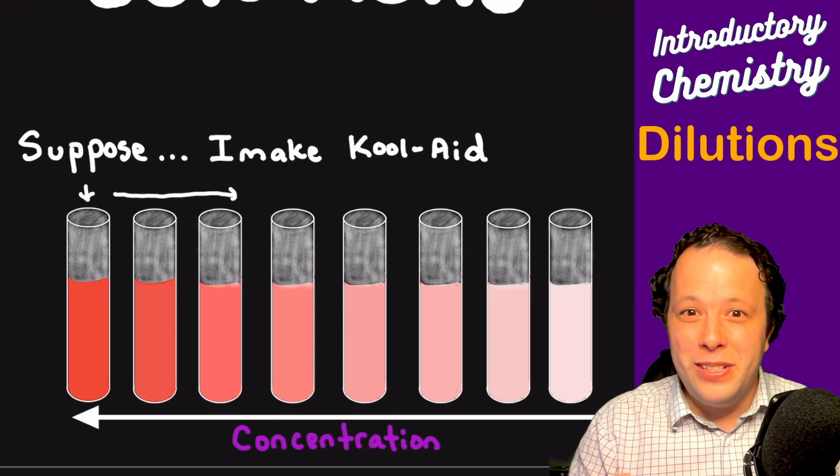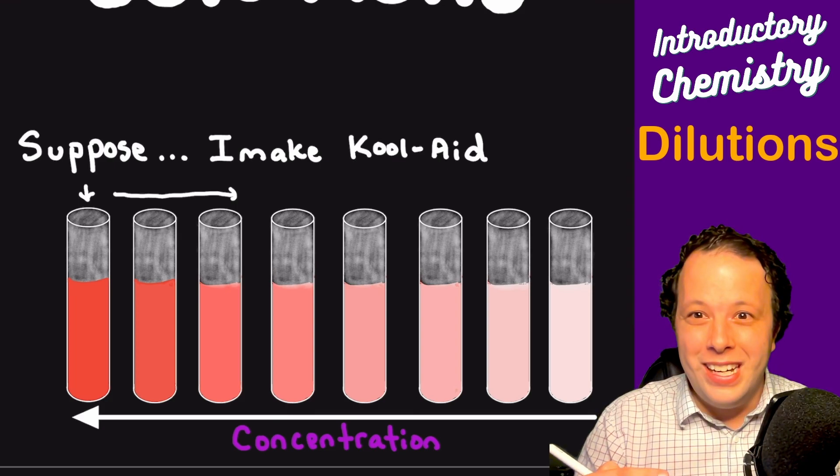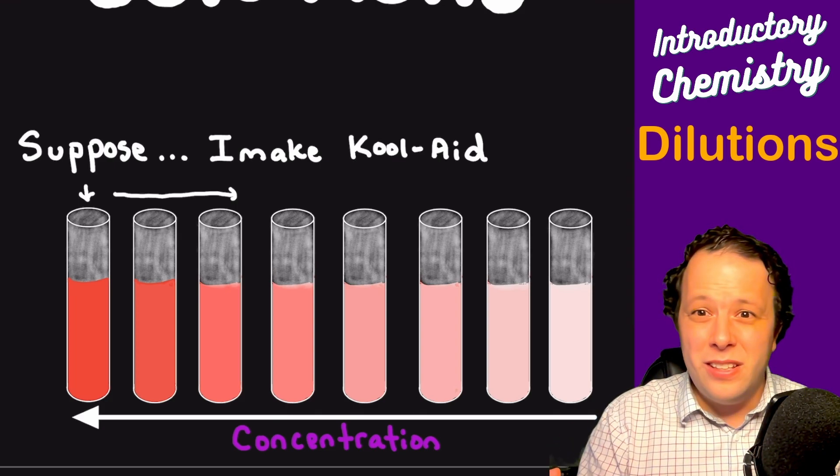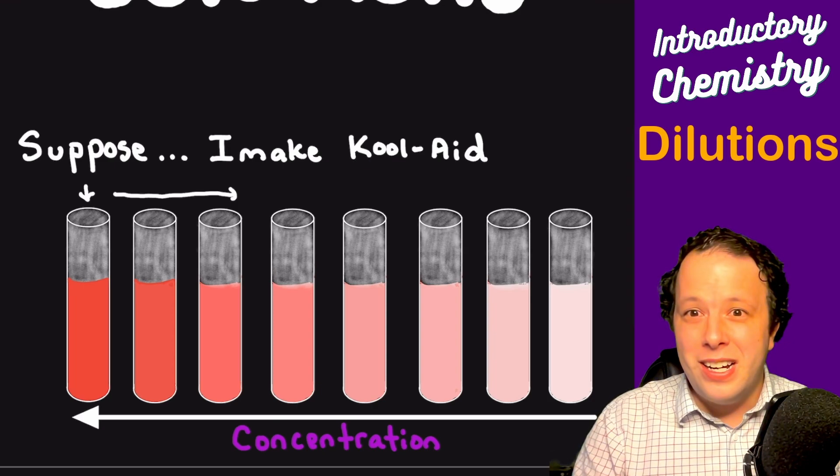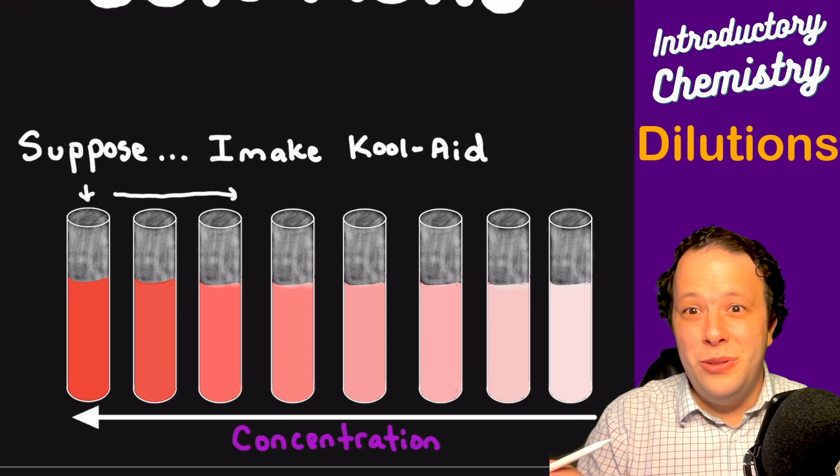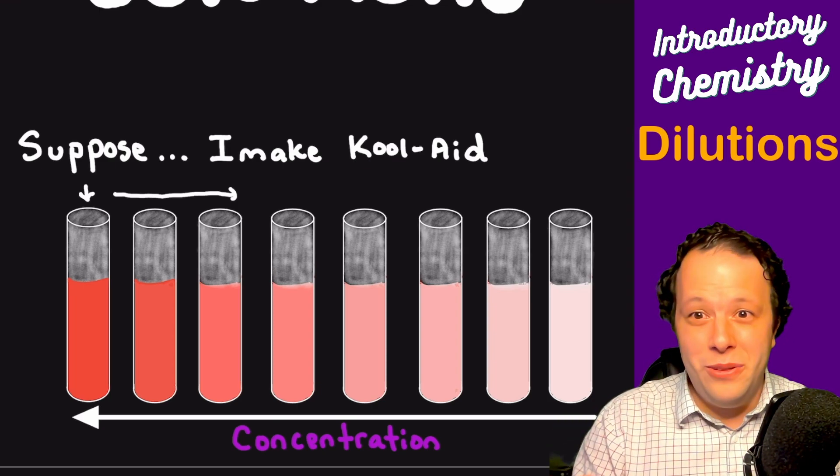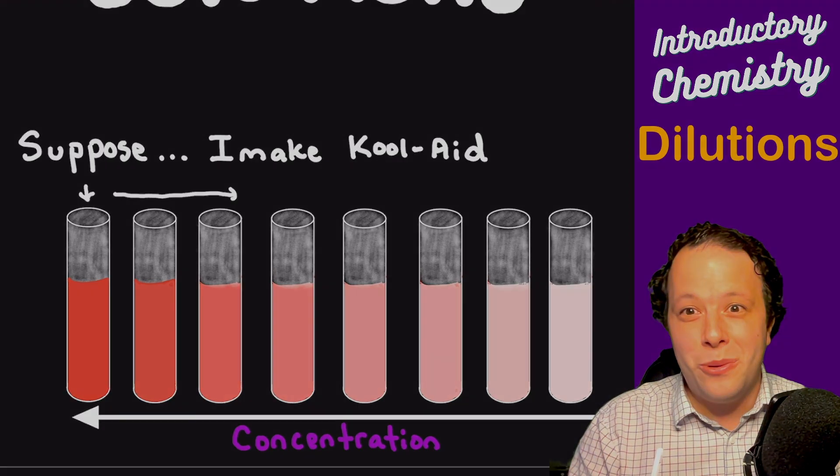So this is what we're going to be exploring. This is a skill that you're going to use in the lab that's very common. Let's try to figure out how to do different calculations for it and how to utilize it for your chemistry course.